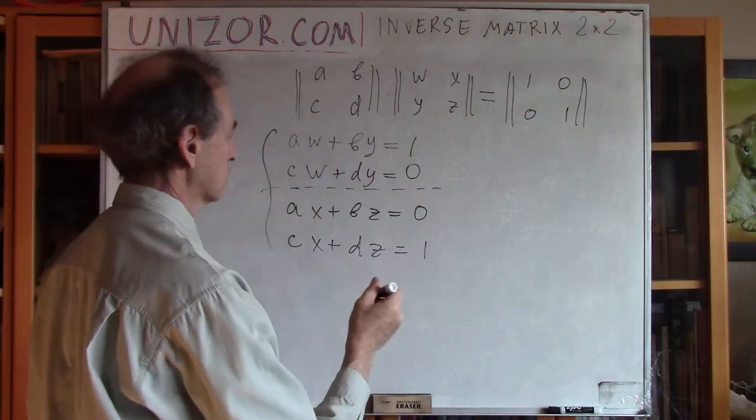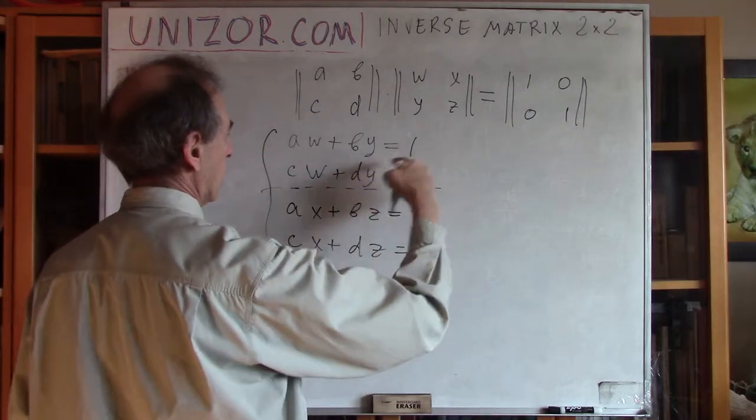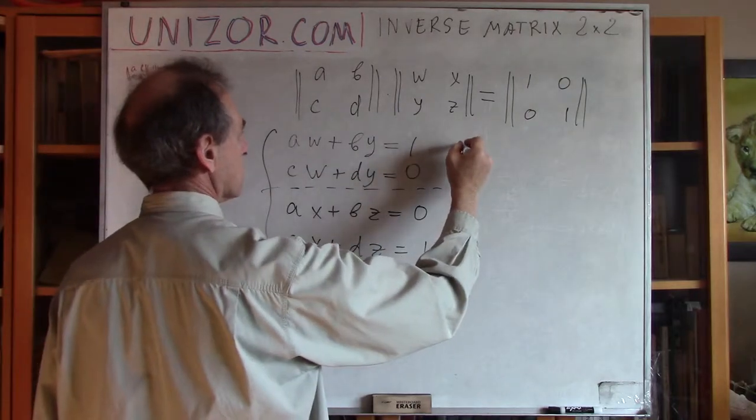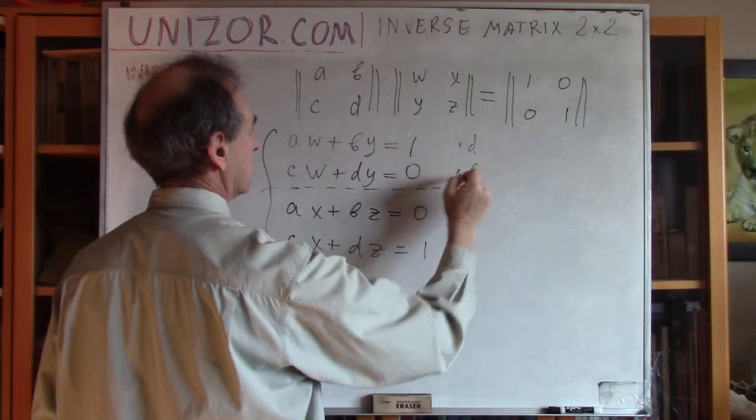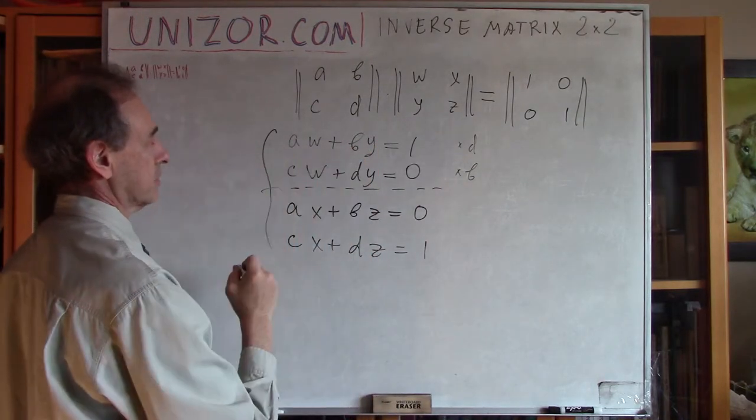You see, there are only W and Y here and only X and Z here. So, I can separately solve this system of two equations with two unknowns and separately from this system of two equations with two unknowns, X and Z in this case. So, let's try to solve this one. We will multiply, well, I want to get rid of Y, so how do I do it? I multiply this by D and this by B, this by D, this by B and subtract.